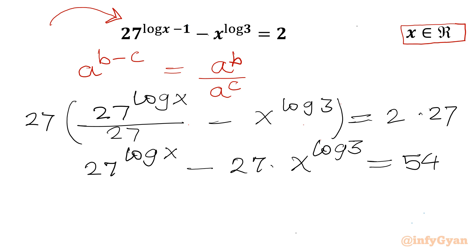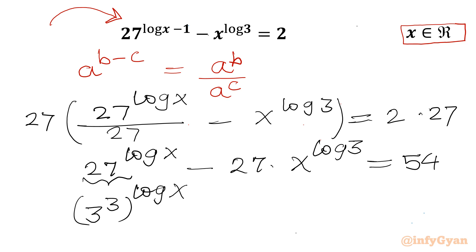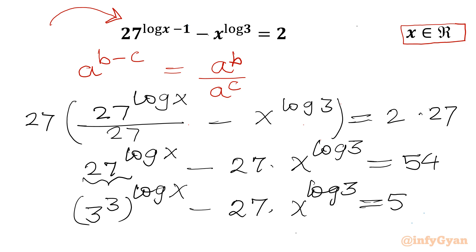Now I will consider 27 as 3 cubed. So I will rewrite the equation as 3^(3 log x) minus 27 times x^(log 3) equals 54.